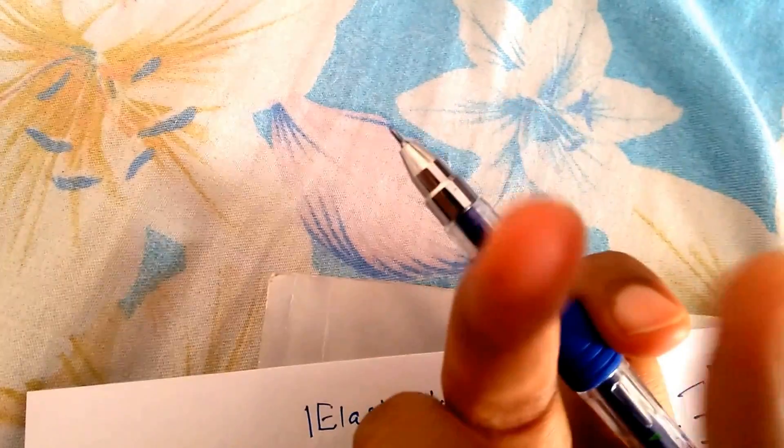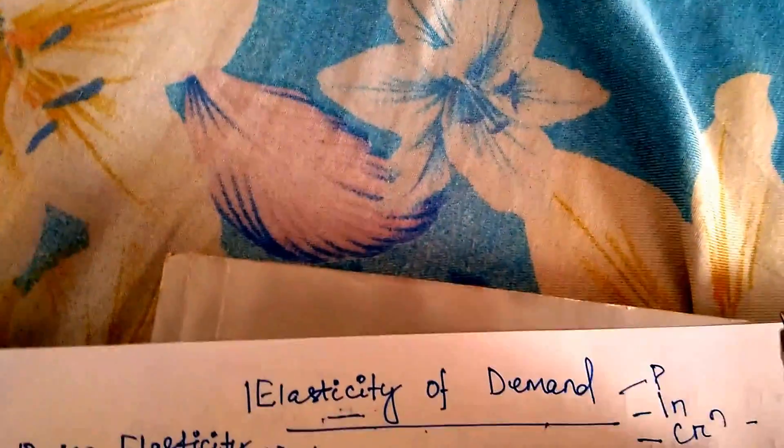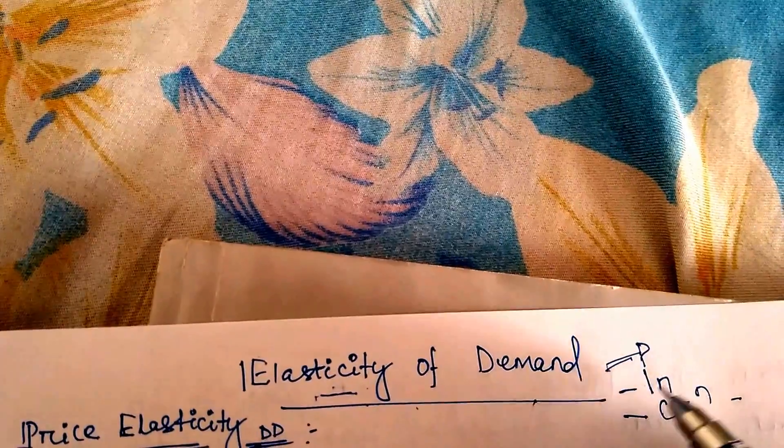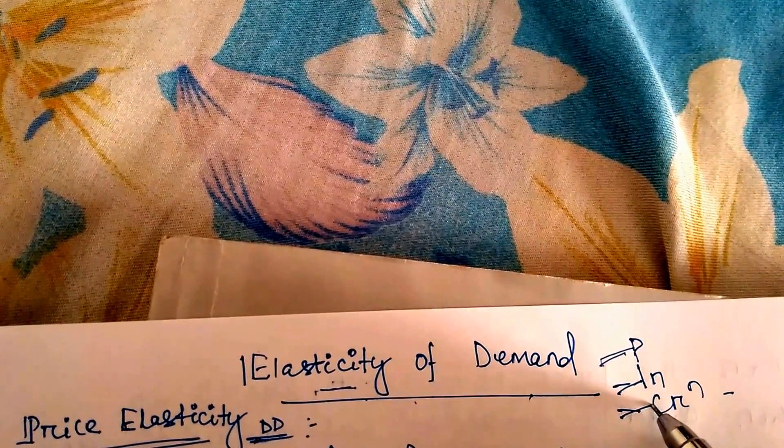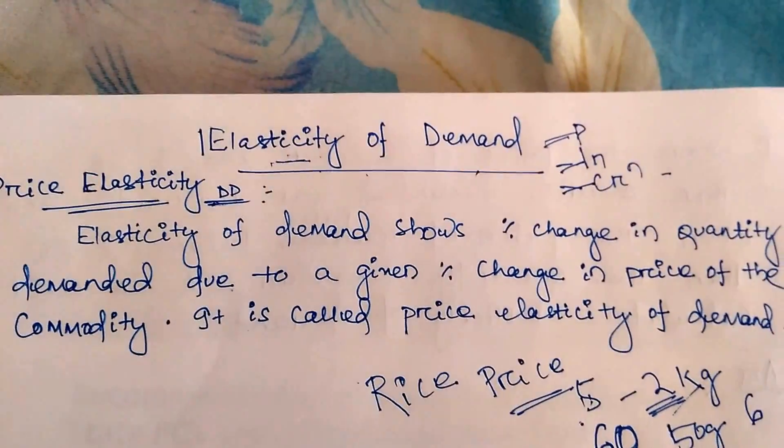If you take the elastic ribbon we girls use for our hairband — it has expansion and contraction. Similarly, in economics, the expansion and contraction in demand due to changes in price is what we call the price elasticity of demand. There are different types: price elasticity of demand, income elasticity of demand, cross elasticity of demand, and more.